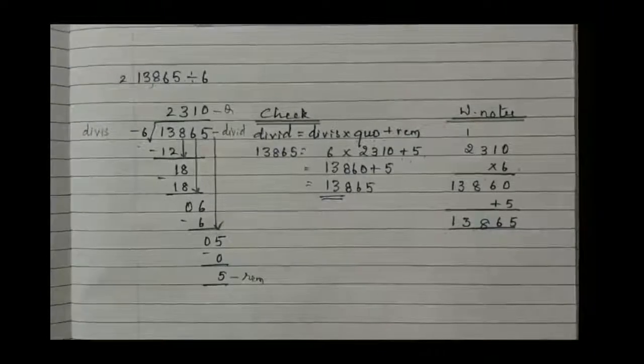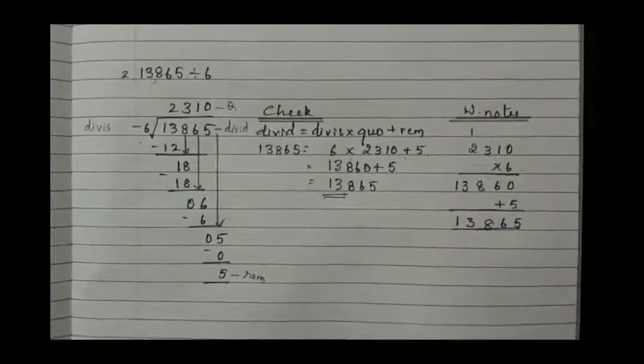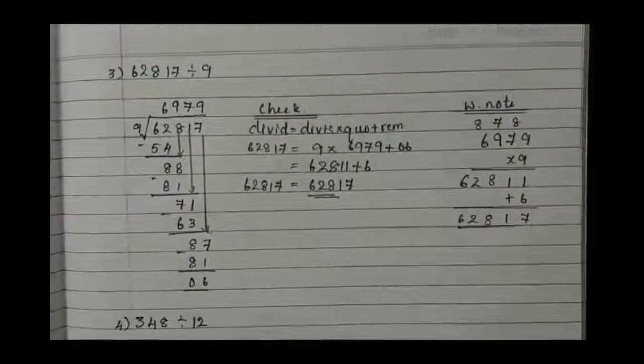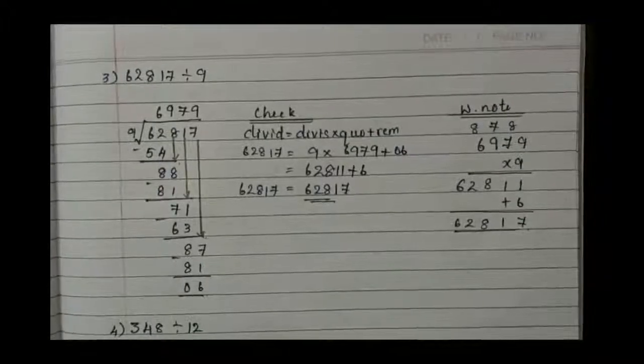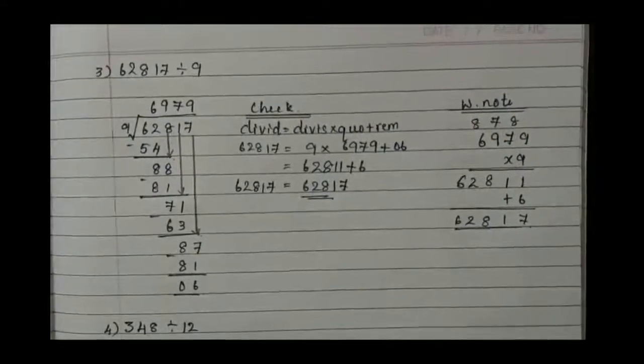To 0 it becomes 5, then 13,865. That means our answer is similar to dividend, then our division is right. Similar way I have done 3 and 4. Let me explain fourth one.